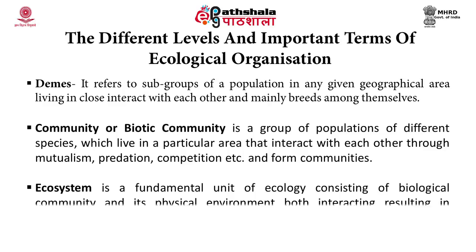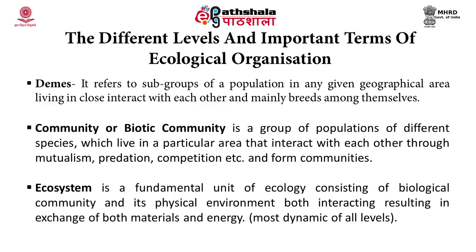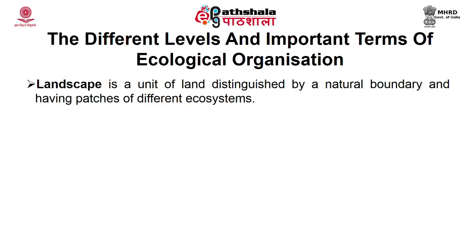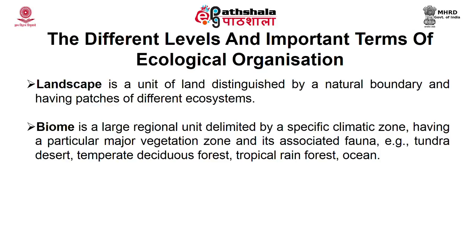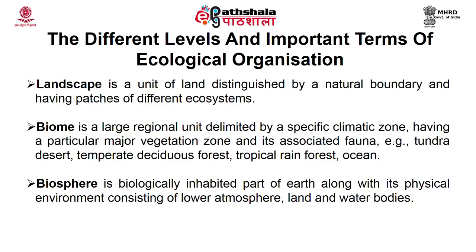Ecosystem is the fundamental unit of ecology, consisting of a biological community and its physical environment, both interacting, resulting in the exchange of both material and energy. Hence it is also called the most dynamic of all levels. Landscape is the unit of land distinguished by natural boundary and having patches of different ecosystems. Biome is a large regional unit delimited by a specific climate zone having a particular major vegetation zone and its associated fauna — for example, tundra, desert, temperate deciduous forest, tropical rainforest, oceans, etc. Biosphere is the biologically inhabited part of the earth along with its physical environment, consisting of the lower atmosphere, land, and water bodies.